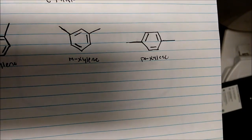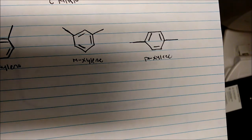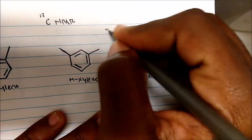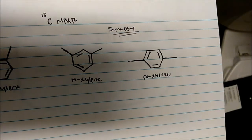Substituents are in the one-four position. Carbon-13 NMR is a lot simpler than proton NMR. Proton NMR takes into account chemical shifts — hydrogen is vibrating — so those spectra are a little bit more involved. What I want you to think of with carbon-13 is how many different carbons are actually in the molecule, and it turns out that symmetry has a huge role in determining how many carbons are different.